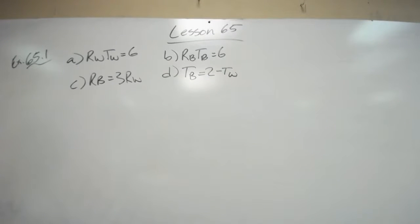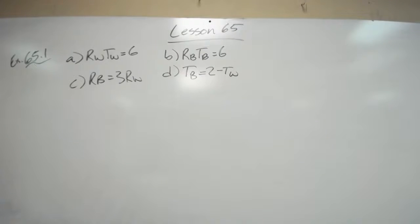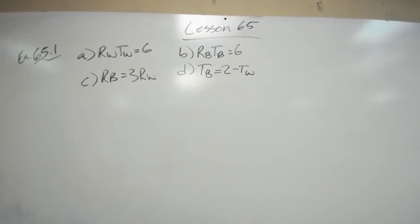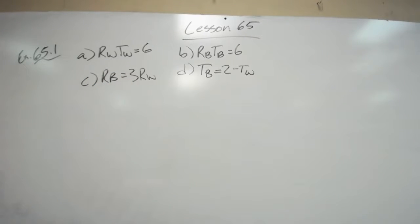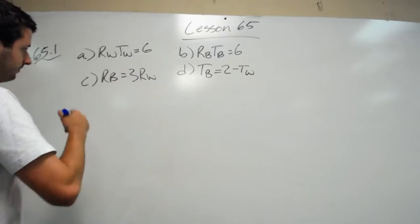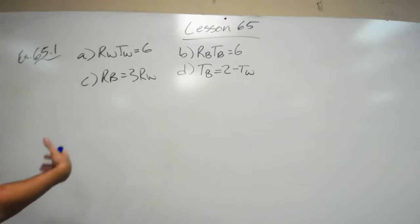Let's learn about advanced substitution in Lesson 65. It wants us to solve for all four variables: rw, tw, rb, and tb. Advanced substitution is just going to test our substitution skills. How well can we plug things in? So let's see what we know.